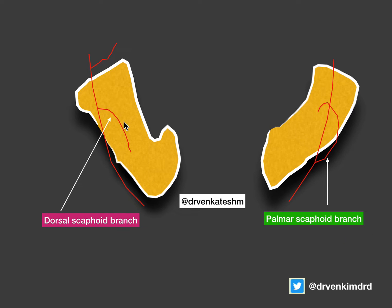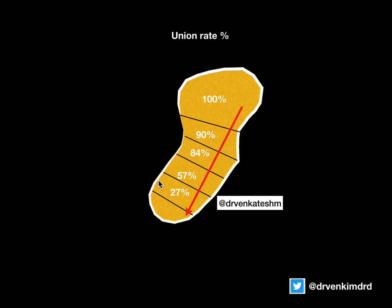The dorsal scaphoid branch as well as the palmar scaphoid branch always go distally, and then the branches come to the proximal aspect of the scaphoid. Coming to the union rate — from distal to proximal, depending upon the fracture line — if the fracture line is located distally, there is a 100% chance of getting united. But as the fracture line extends from distal to proximal, the chance of union decreases. This is again implicated due to this peculiar vascular supply.